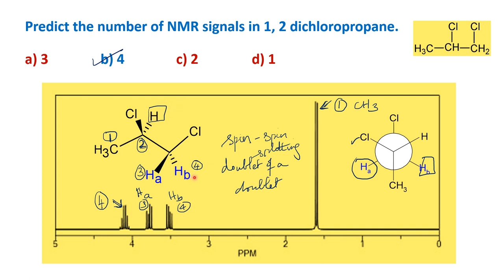So that is how the NMR signal of 1,2-dichloropropane can be explained. It has four signals: one due to the methyl proton, one due to the methine proton, and two from the methylene protons on carbon 1 which are not equivalent — they are diastereotopic protons — and as a result give two different signals. Thank you.